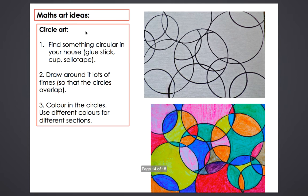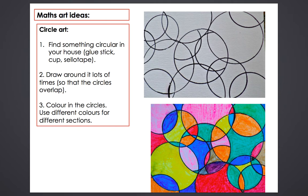Finally, we've got some maths art ideas, because maths isn't always just about numbers. This first one is called circle art. Find something circular in your house — a glue stick, a cup, or some sellotape — and draw around it lots of times so the circles overlap each other. Then choose some colours and colour in each section in different colours to create a pretty pattern.